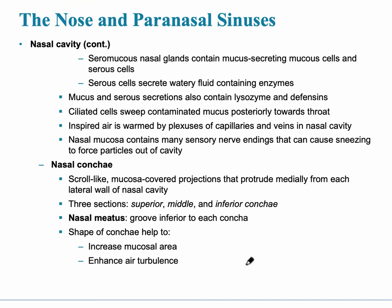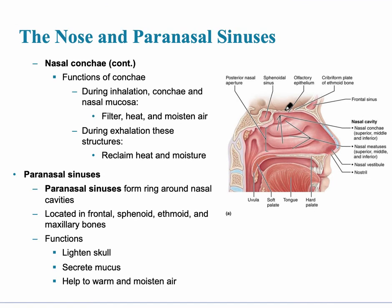The nose and the paranasal sinuses are basically wet membranes, with mucous and serous secretions that also contain lysozyme and defensins. The function of the nasal conchae is to filter, heat, and moisten the air. There are four paranasal sinuses, which are spaces within bones, so they lighten the skull. They also secrete mucus, helping to warm and moisten the air. Many people have experienced sinusitis — infections to the sinus membrane — which can cause sinus pain in that specific area.